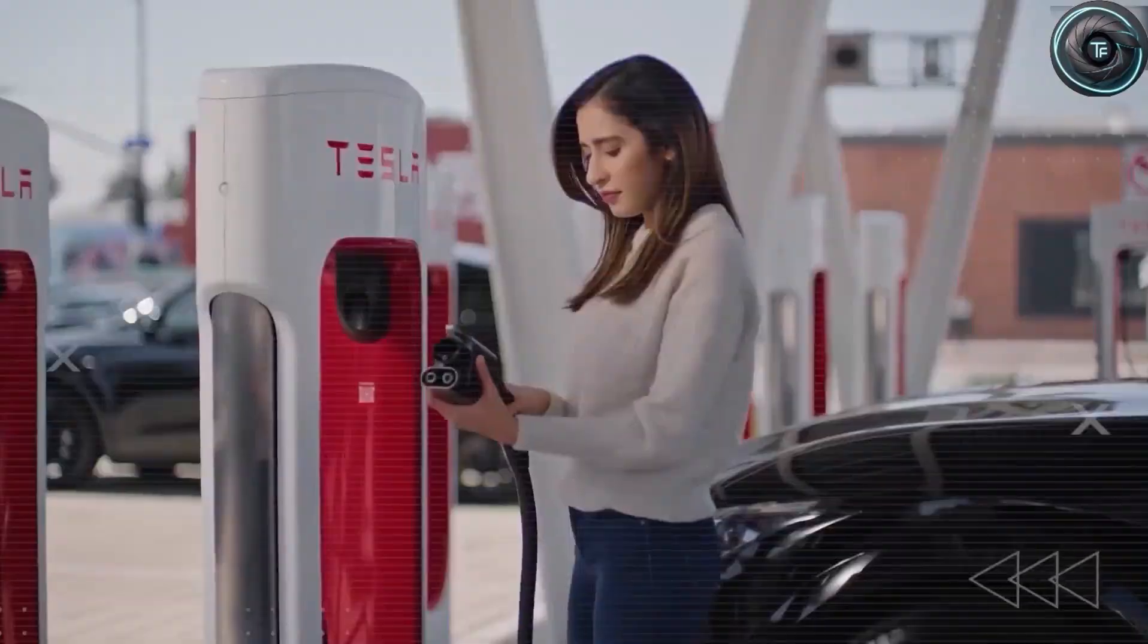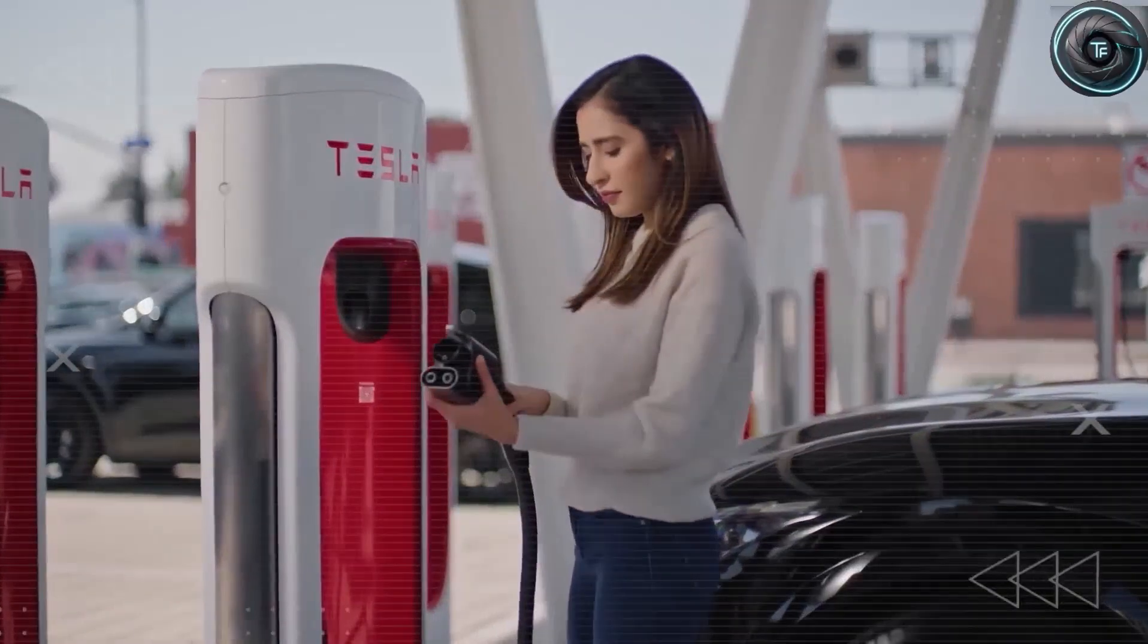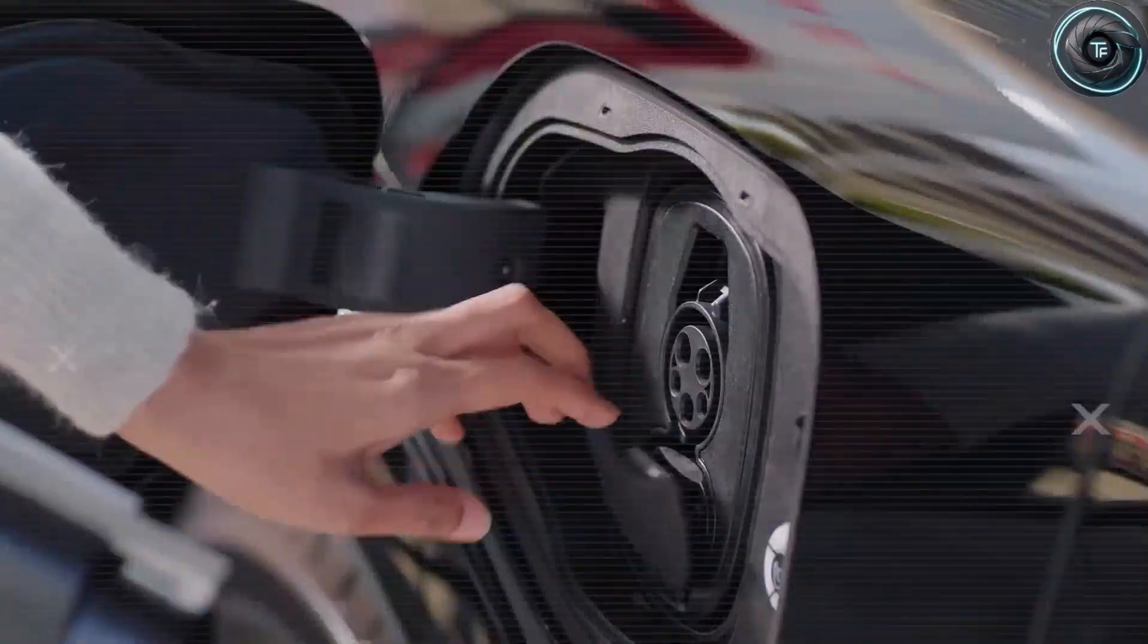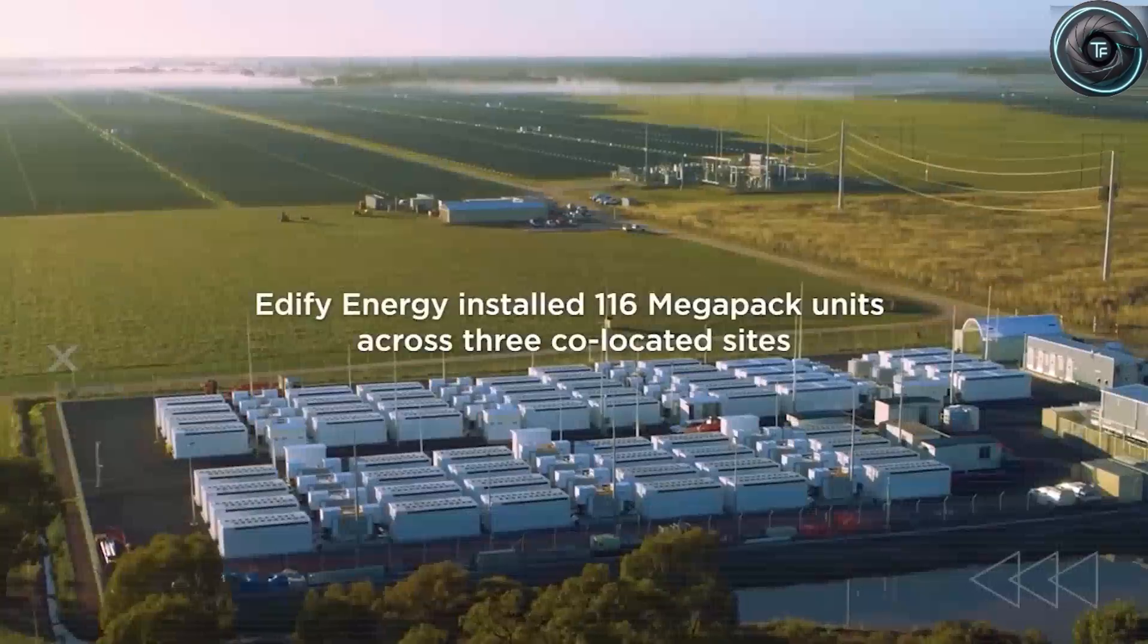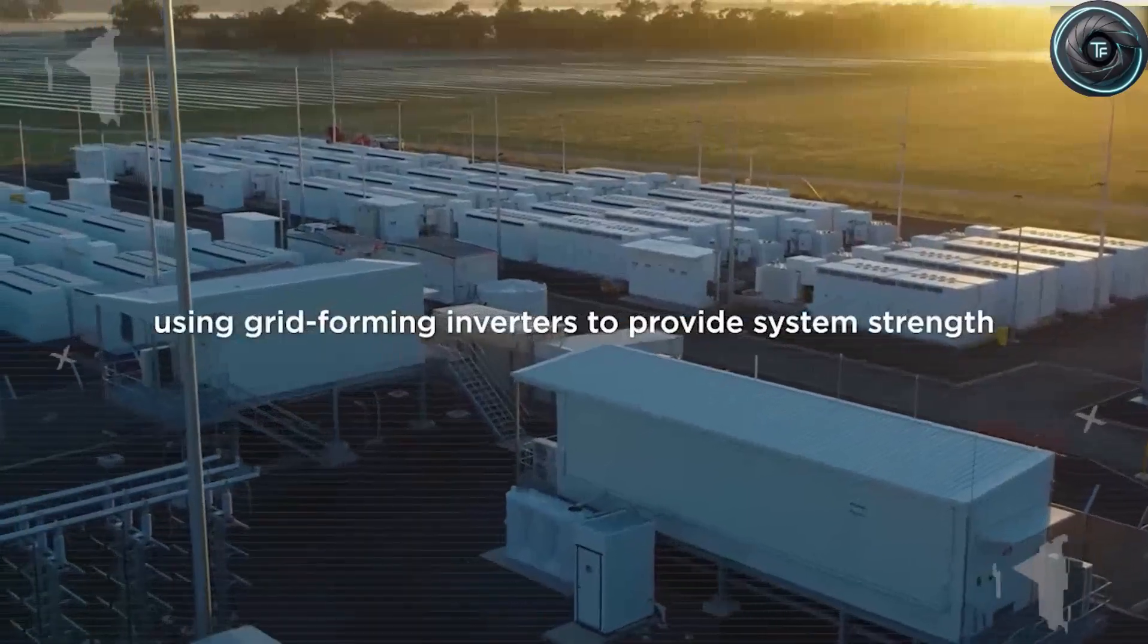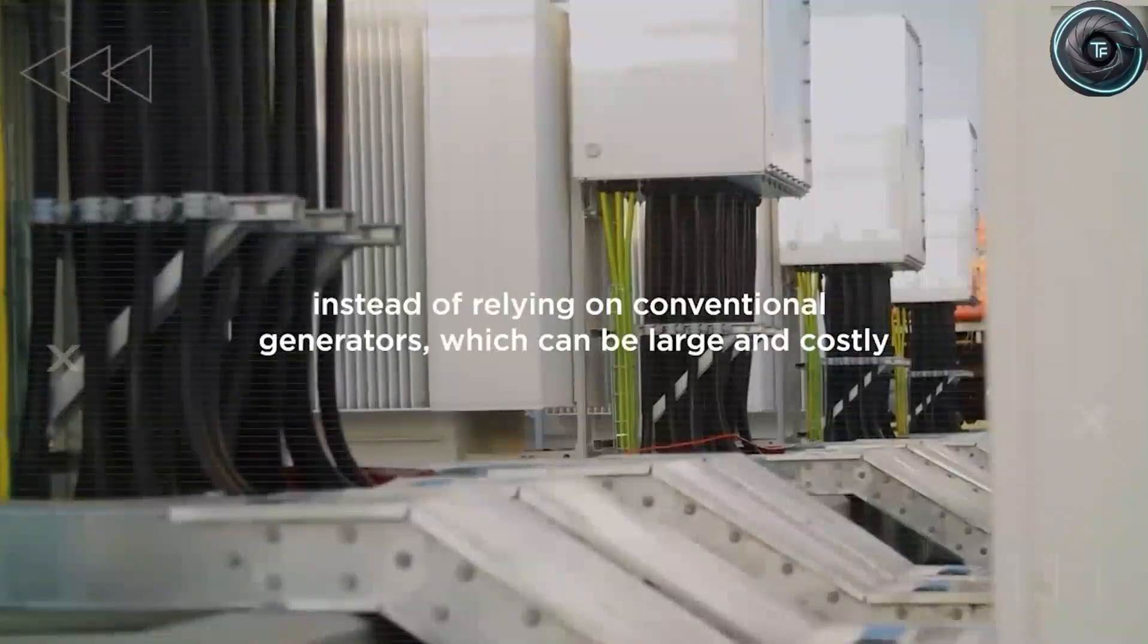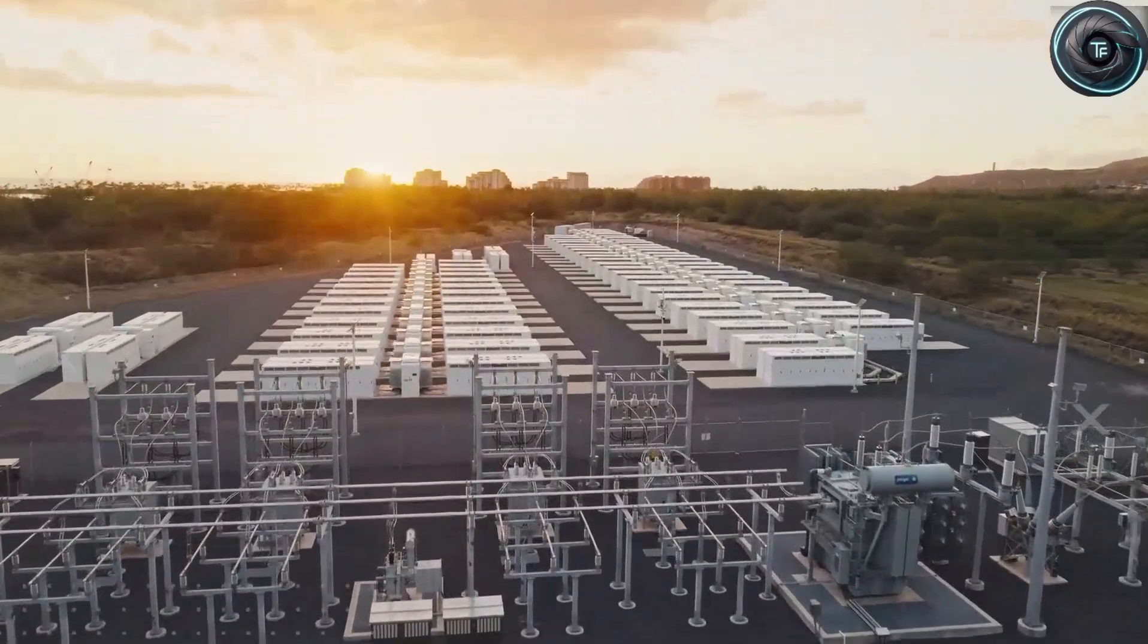And this is where Elon Musk's true genius shows. Tesla isn't just building cars—they're building an energy empire. Solar panels on rooftops, power walls in garages, megapacks in cities, and now aluminum ion batteries in cars. Every one of these connects through the same digital nervous system: Tesla software. This isn't about selling hardware. It's about controlling the flow of energy itself. Imagine a world where your car, your house, and your workplace all share electricity intelligently, cutting waste and slashing bills without you lifting a finger. That's the future Tesla wants.